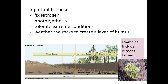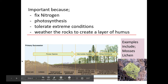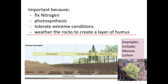Lichen and mosses are really important because they can fix nitrogen, they can photosynthesize, and they can tolerate extreme conditions present in this hostile and harsh environment of bare rock. Very importantly, they weather the rocks to create a layer of humus — a very thin layer of soil which is needed for the next lot of plant organisms to grow.